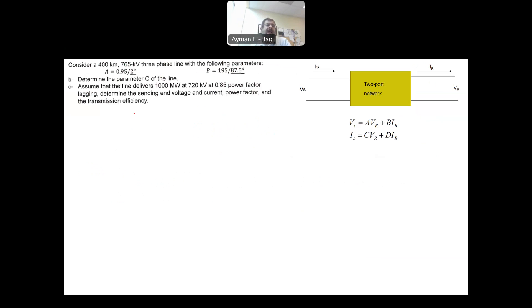So here we have A equal to 0.95 angle 2 degrees. The maximum value of A is 1 actually, when the system is basically short line. B represents, and this is in ohms, represents the series impedance of that line. It's asked to find the C and here it is part B and C. Part A usually is a theoretical question. I don't want to go through the theoretical questions because you can easily Google them. Then once you find the C, then you will be using the ABCD parameters as we will see in part B. So let's first start by finding part C.